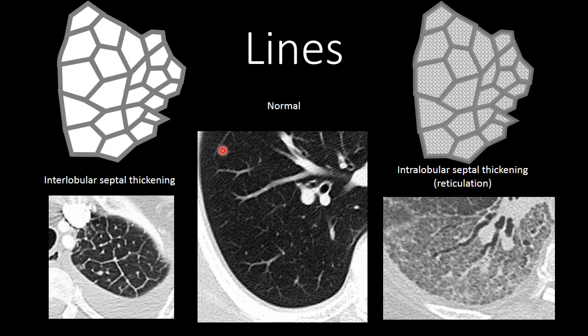Now let's look at some examples with graphical representations and zoomed-in chest CTs. On the left, we see a graphical representation of smooth interlobular septal thickening, and below that, a CT where the person has pulmonary edema. That edema is causing fluid in the interlobular septa to make them more prominent — the fluid may be within congested veins, congested lymphatics, or third-spaced. But at this point, the fluid has not started to accumulate within the alveoli. Compare that to a normal patient, where you should not see the interlobular septa.